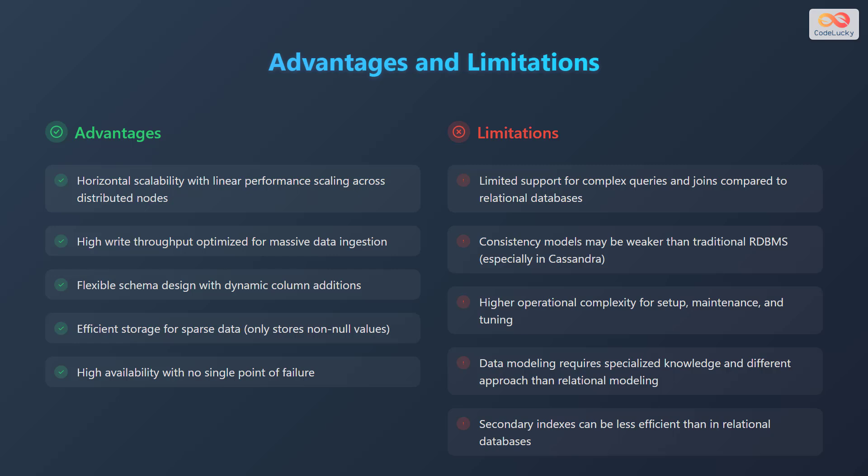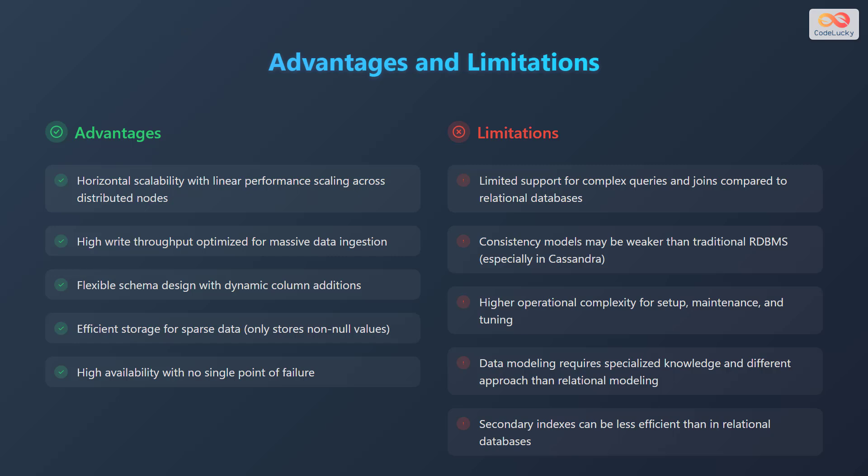Column family stores have several advantages. They offer horizontal scalability with linear performance scaling across distributed nodes, allowing you to easily scale out your database as your data grows. They provide high write throughput optimized for massive data ingestion, making them suitable for write-heavy workloads. They offer flexible schema design with dynamic column additions, allowing you to add new columns without requiring schema migrations. They also provide efficient storage for sparse data, only storing non-null values, which can save storage space. Finally, they offer high availability with no single point of failure, ensuring your data is always accessible.